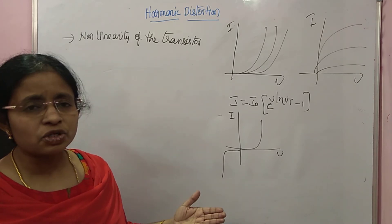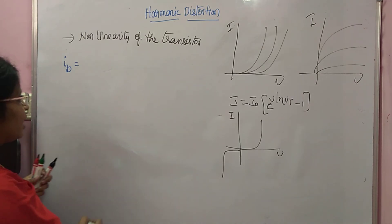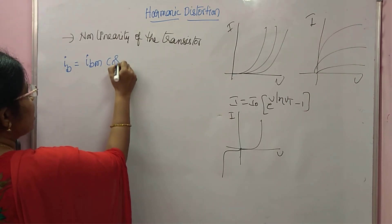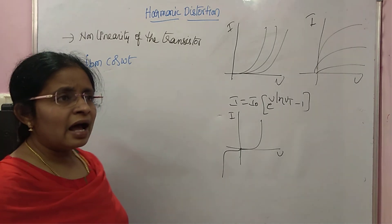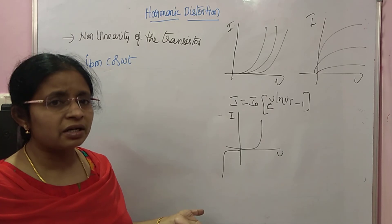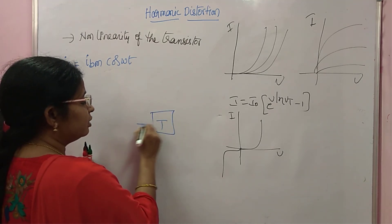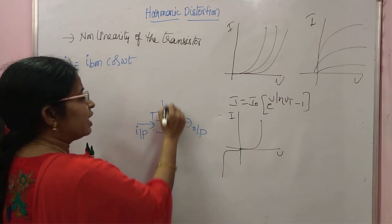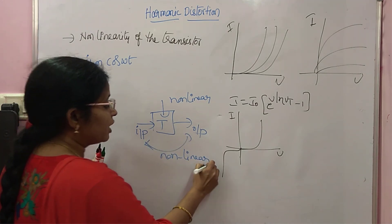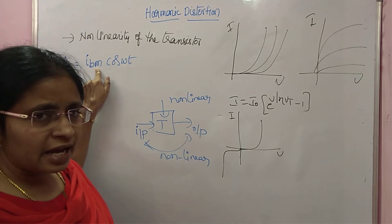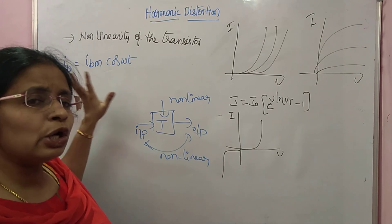Because the transistor is non-linear, the input and output also vary in a non-linear fashion. If we assume the input current is IB = IBm·cos(ωt), then the output current IC can be expressed under a non-linear assumption. For example, if IC = G1·IB, that would be linear — like Y = MX. But IC = G1·IB + G2·IB² is non-linear, just like Y = MX + NX², which is also non-linear.